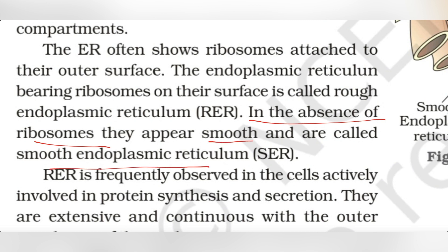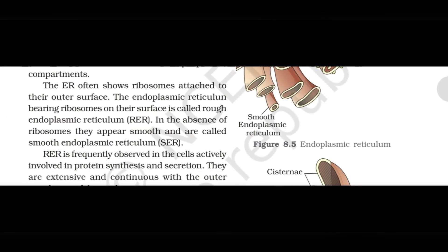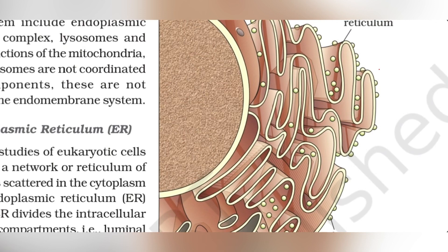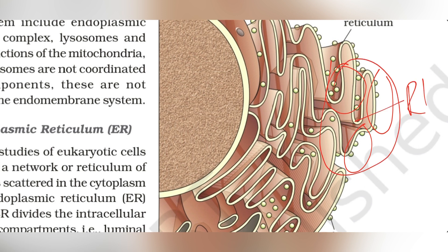When the endoplasmic reticulum lacks ribosomes on its surface, it appears smooth and is called smooth endoplasmic reticulum, or SER. Looking at the diagram: if ribosomes are attached, it is RER; if ribosomes are absent, it is SER.